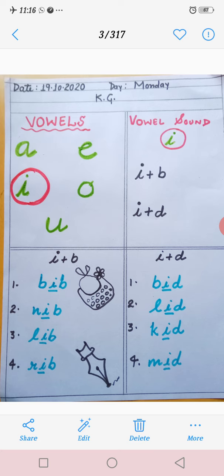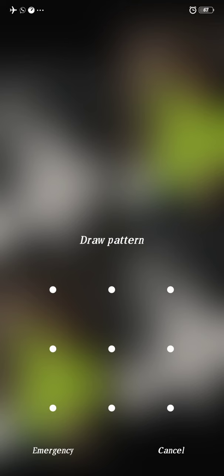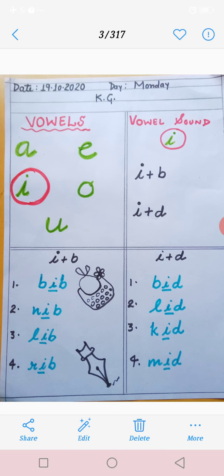And next we will learn the vowel sound I. How many vowels are there? I think you all have learned ki 5 vowels are there. It is written. So you can see properly.